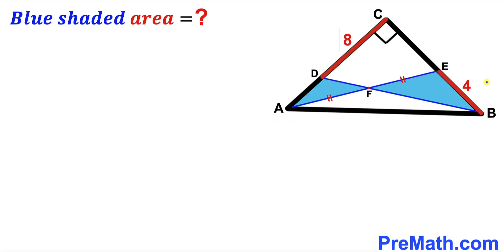The only info given to us is that segment EB has length 4 and segment CD has length 8, and this side segment CE is unknown.